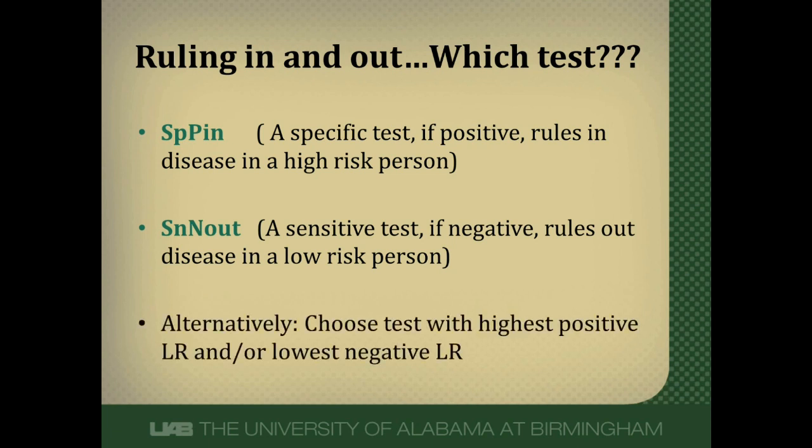Alternatively, likelihood ratios can be used to choose a test. If we want to rule in disease, we want to pick a test with a very high positive likelihood ratio. If we want to rule out disease, we want the lowest possible negative likelihood ratio. Likelihood ratios are very useful because they incorporate both sensitivity and specificity, making them more useful than those measures by themselves.